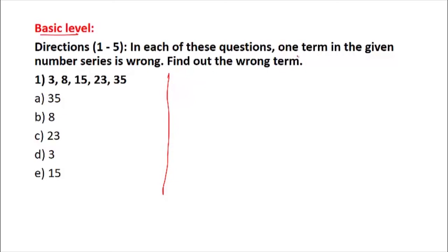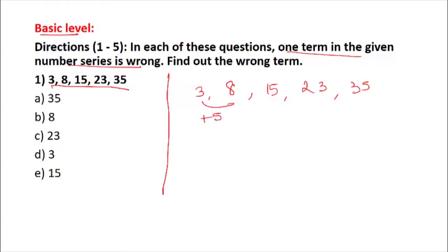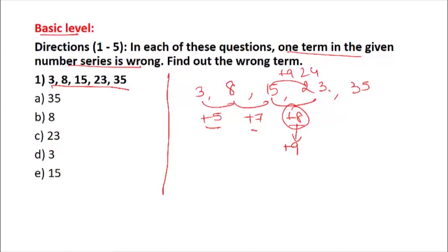This is basic level. The question says one term in the given number series is wrong, and you have to point out that number. The series is: 3, 8, 15, 23, 35. If you add 5 you get 8; add 7 you get 15; add 8 you get 23. But notice the differences 5, 7 are odd - suddenly we get an even number. According to the correct rule, the difference should have been 9, so 15 plus 9 equals 24. Then adding 11 gives 35.